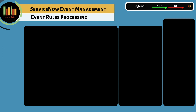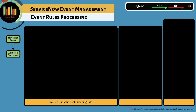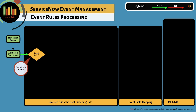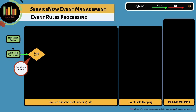Let's do a deep dive on how events are being processed. When an event record is created in the event table, the system checks for an existing event rule. The first thing that the system checks is the source of the event. If the source of the event matches the source in an existing rule, then a rule is matched — even if the additional filters also match.